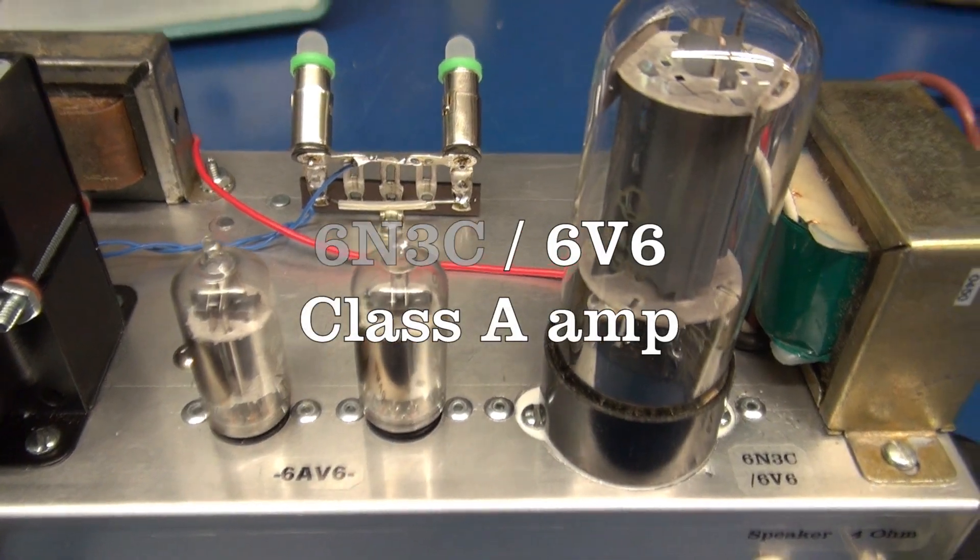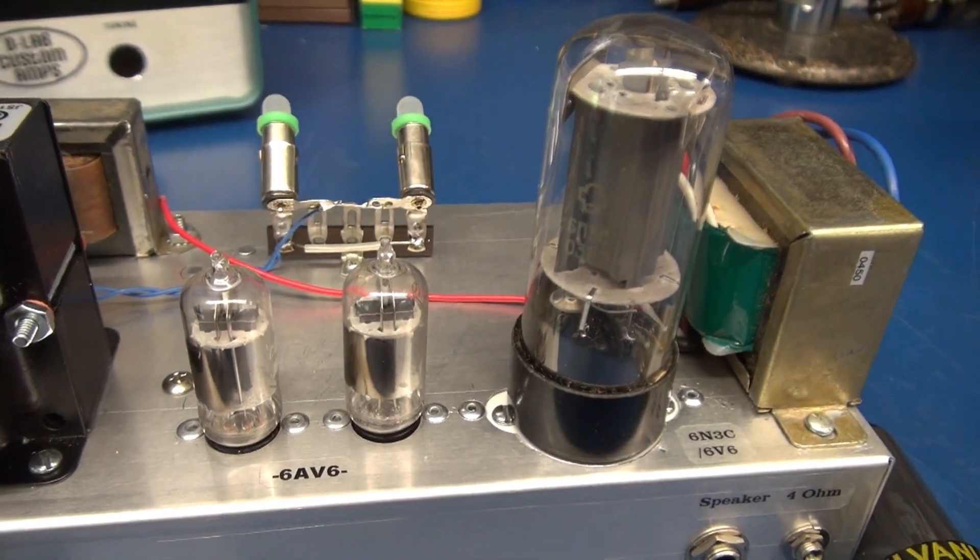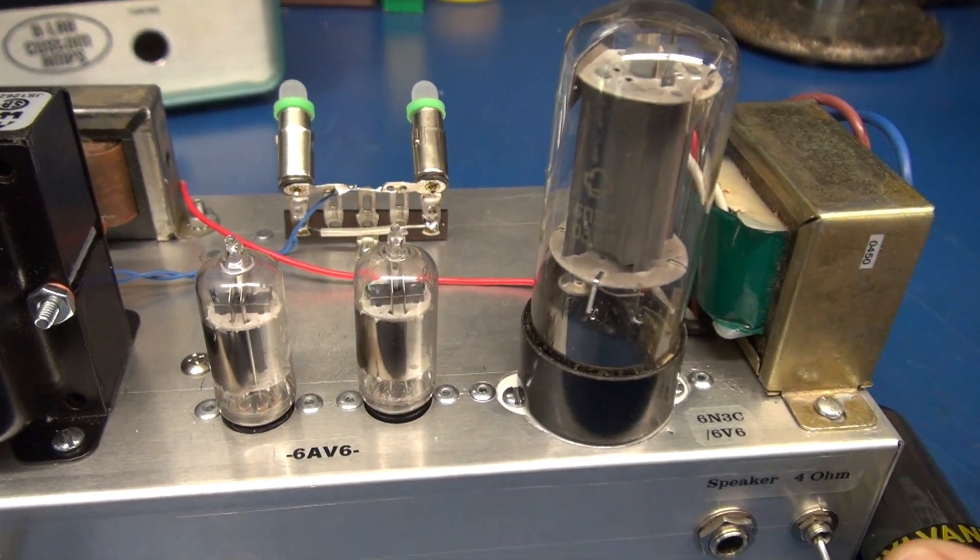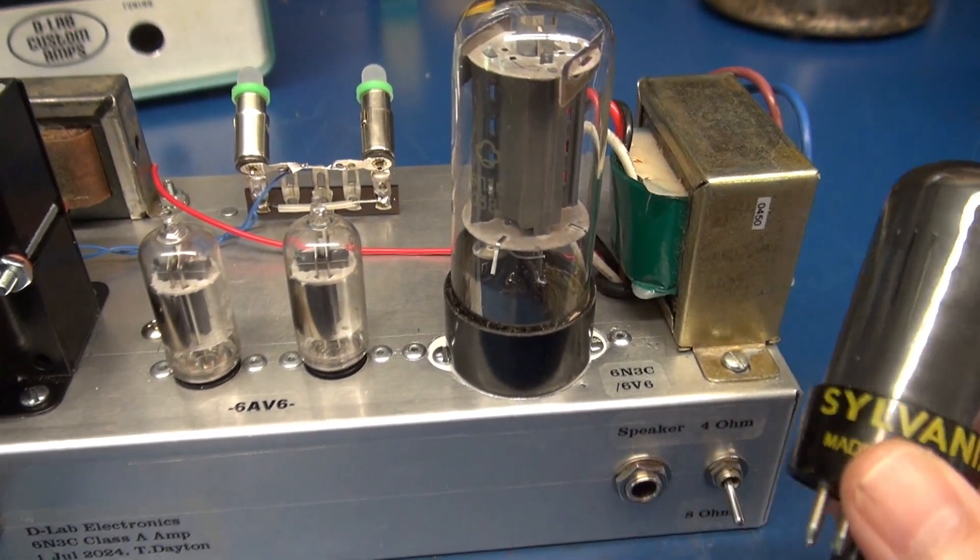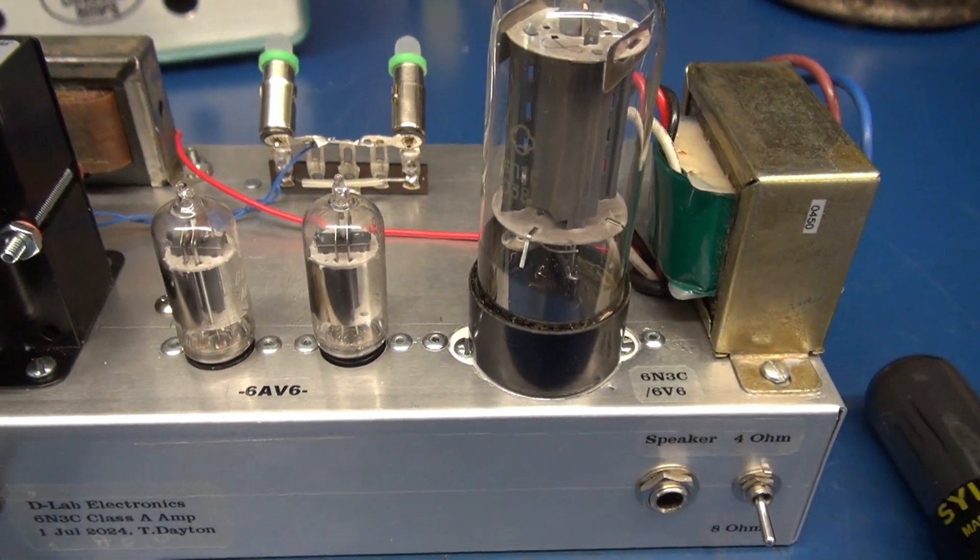Welcome to D-Lab. In this video I'm going to show you the new 6N3C amplifier which can also run a 6V6 without adjusting bias. Let me show you how that works.